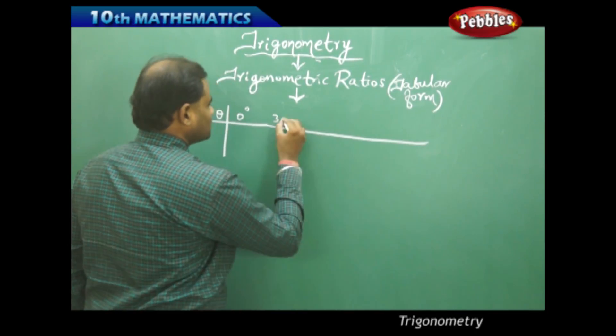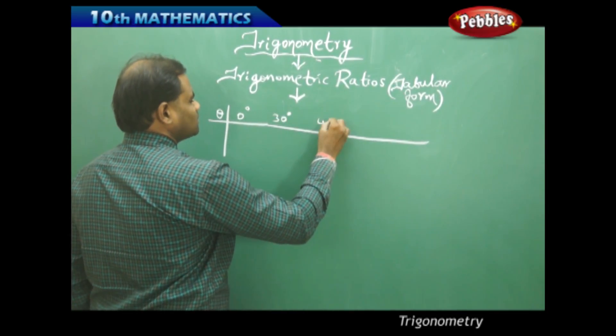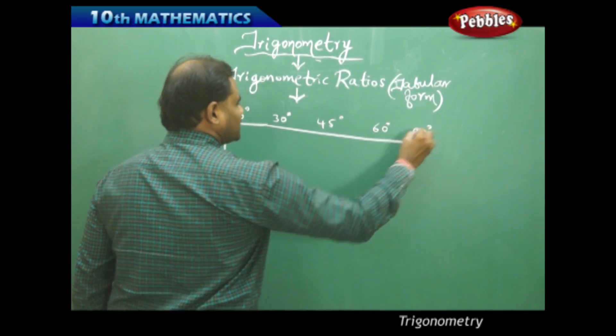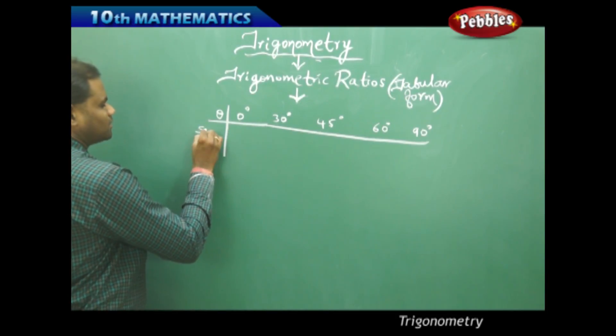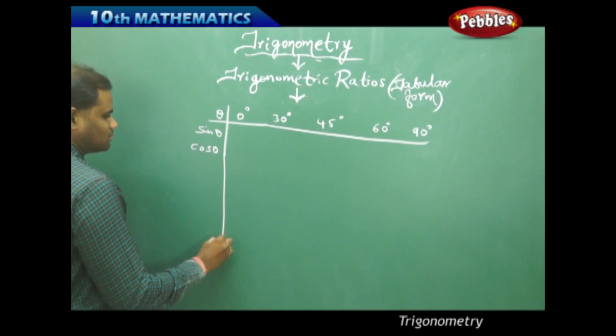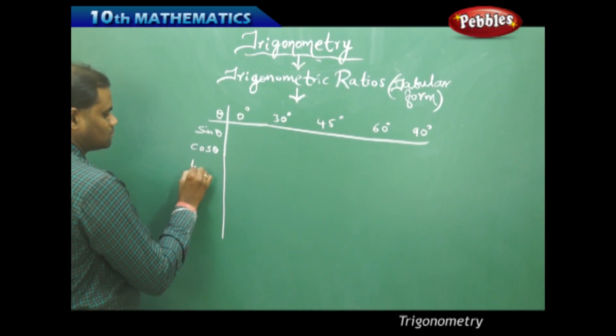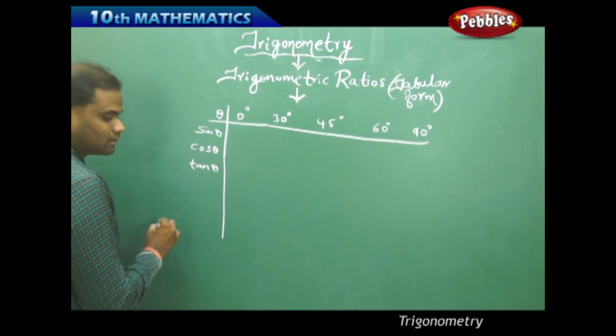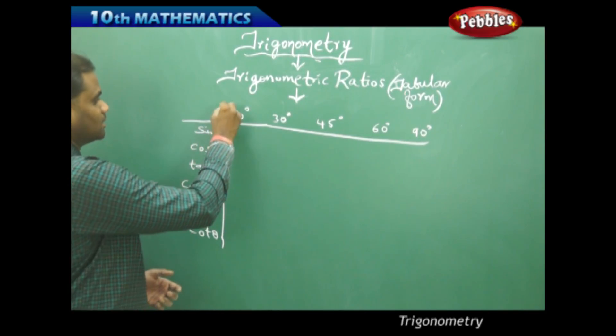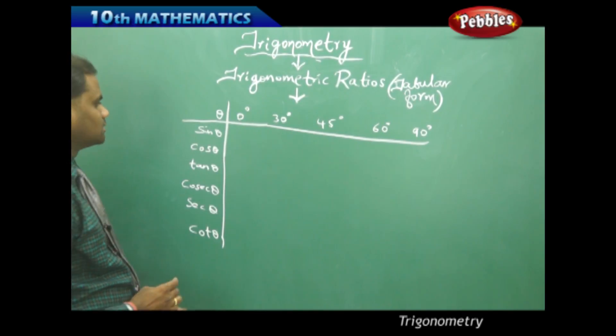30, 45, 60 and 90. And I take sin theta, cos theta, tan theta, cosecant, secant and cot - the six trigonometric ratios which I take on the left hand side and the angles on the right hand side.